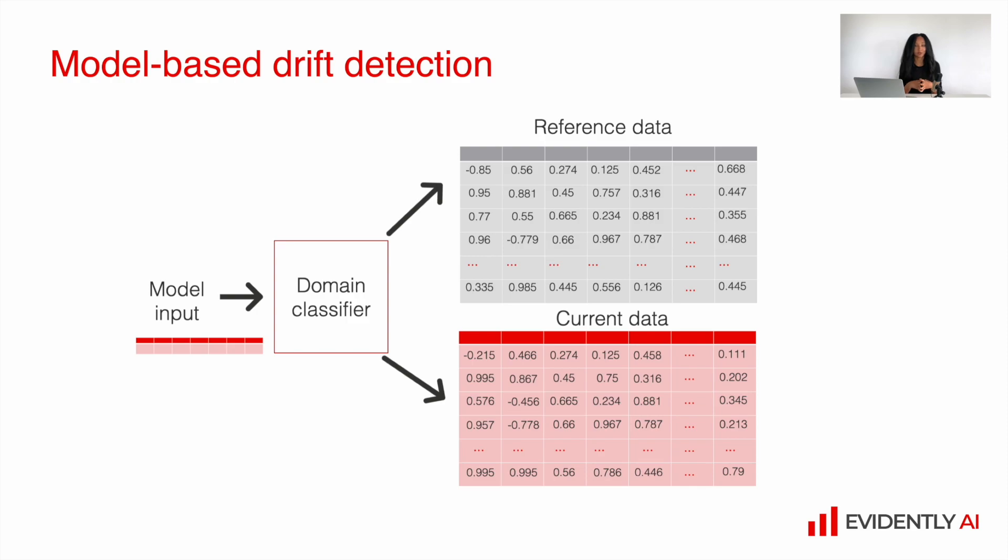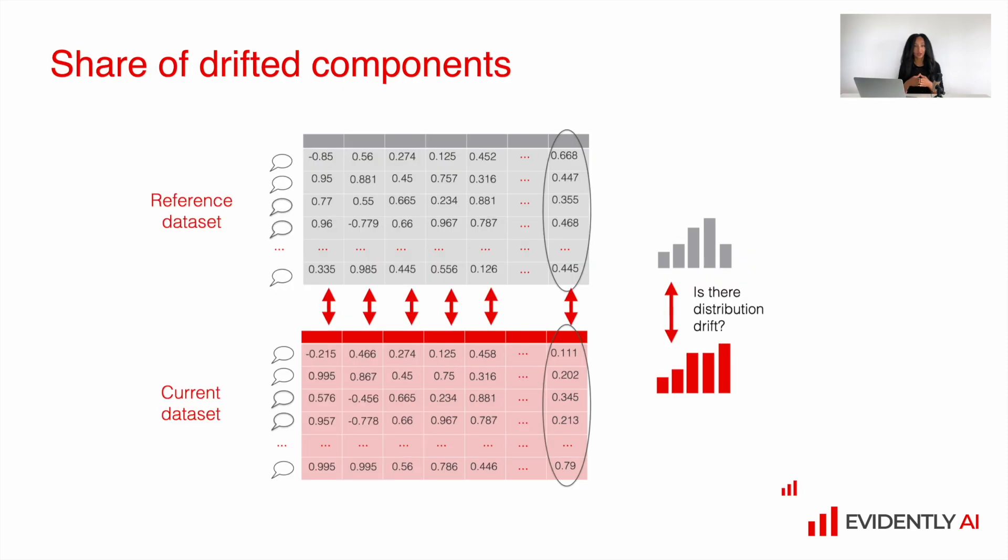The other idea is model-based drift detection. In this case, instead of raw data, we can use the embeddings to build a domain classifier which will try to distinguish between the reference data and the current data. The approach is quite similar, but there are some limitations because we cannot really use the information of strongest features or the best objects to figure out what is the source of drift. We will have the estimation of the confidence of our models into distinguishing between reference and current data, but we won't really be able to understand the source of the differences.